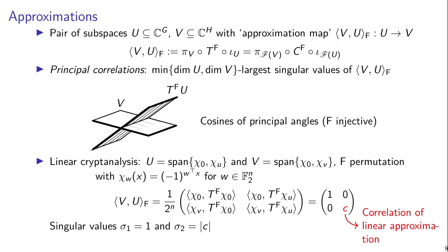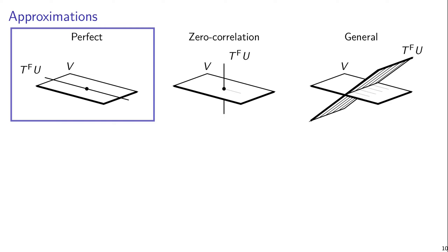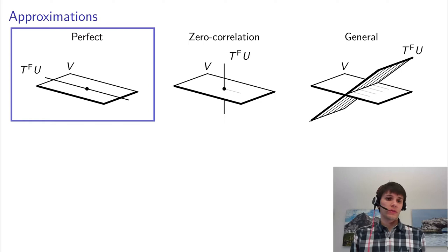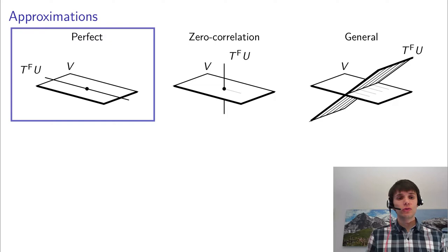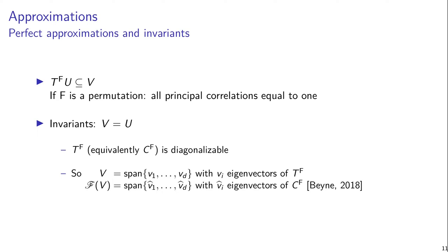This means that indeed principal correlations are a strict generalization of ordinary correlations. So now I want to discuss a few possible geometric situations for approximations. The first case I want to discuss is that of perfect approximations, where we have a situation where the space T_f times U is included in the output property space V. And if F is a permutation, this is the same as saying that all the principal correlations are equal to 1.